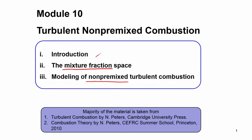The majority of the material in this course is taken from two books: the Turbulent Combustion book by Norbert Peters published by Cambridge University Press, and Combustion Theory by Norbert Peters from the CEFRC Combustion Energy Frontier Research Center summer school at Princeton, where these lectures were developed in 2010. This is available online free of cost on the CEFRC website. These are both the references we will follow for turbulent non-premix combustion, and in the next module, turbulent premix combustion.